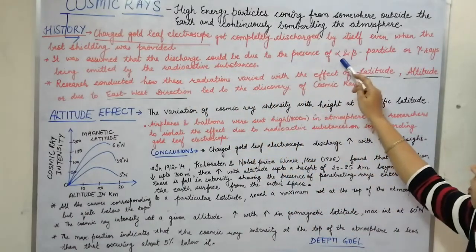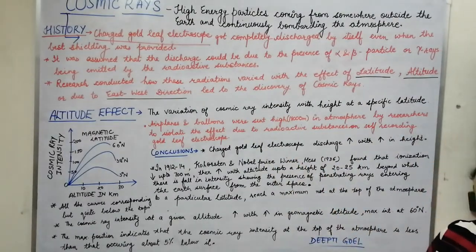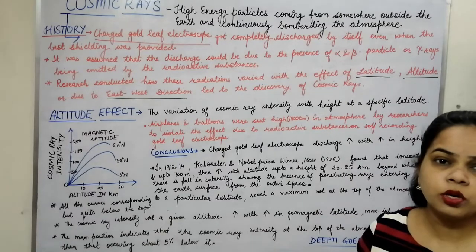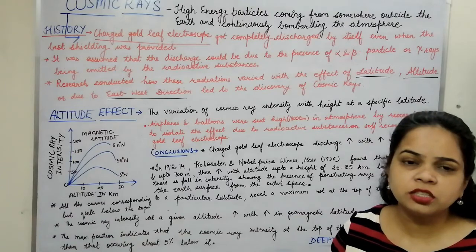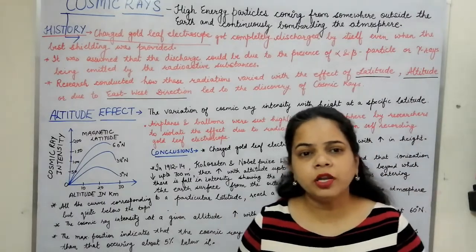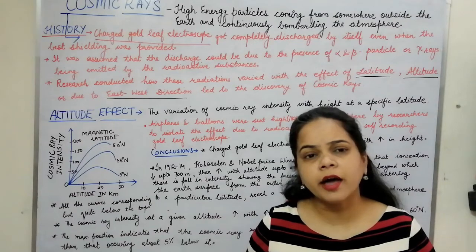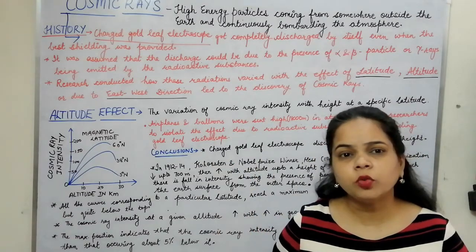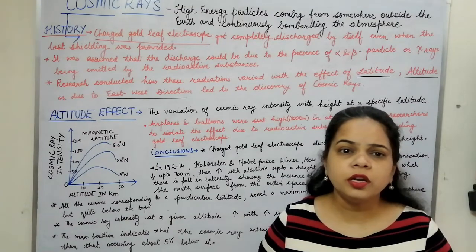It was assumed that the discharge could be due to alpha, beta particles, or gamma rays emitted by radioactive sources. Research was then conducted to study how the discharge varied — whether the electroscope discharged only at a particular place, whether it varied with altitude, or whether it varied with direction changes in the east, west, south, or north. Observations were made at various locations, at higher altitudes, above mountains, and deep inside water.